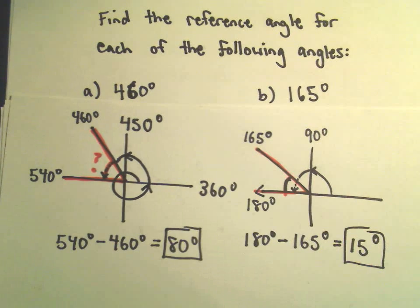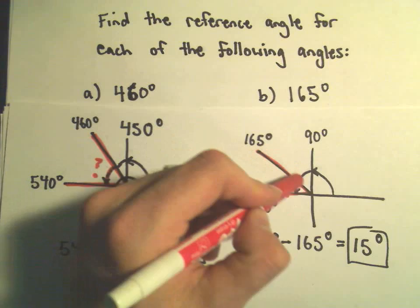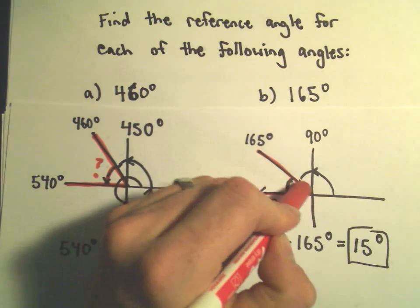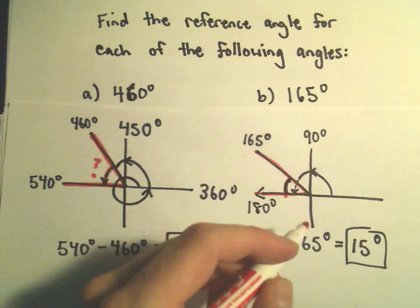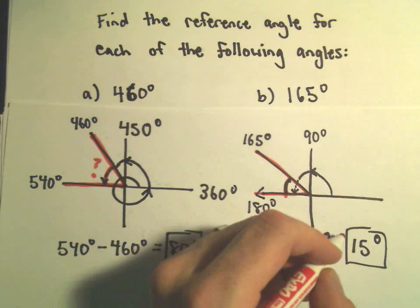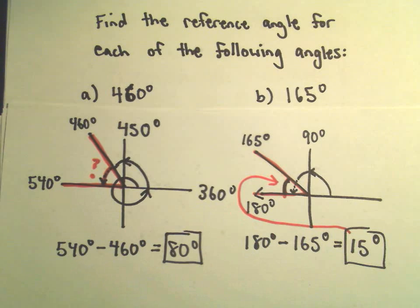So the idea is this angle between the x-axis and the terminal ray, this positive angle that's between 0 and 90, is going to have a measure of 15 degrees.